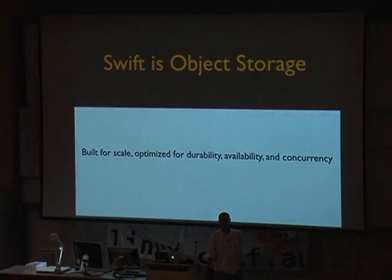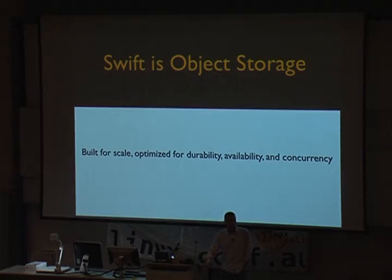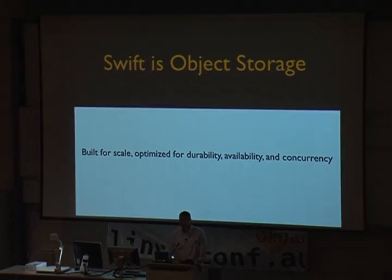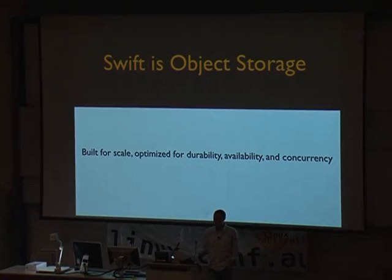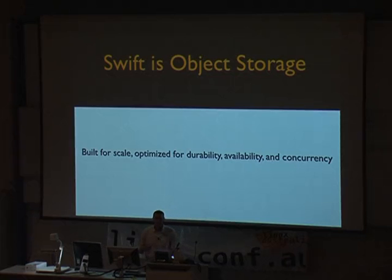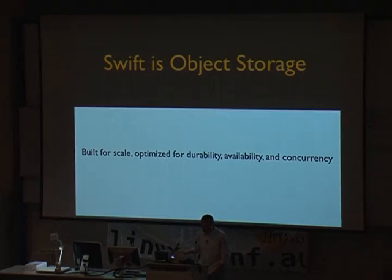Swift is obviously object storage. It's not block storage. It's not a distributed file system. You can't mount it. It's not POSIX compliant. In fact, it relaxes some of the POSIX constraints that would be on a file system in order to achieve massive scale. Swift was built for scale, and it's optimized for durability — it's a storage system — availability, and concurrency. Let's cover each of those in turn.